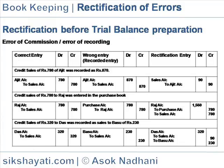Error of commission — Error of recording: Credit sales of Rs.780 to Rajit was recorded as Rs.870. The rectification entries would be as follows.